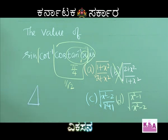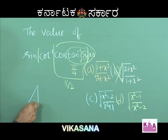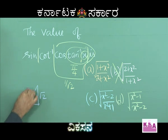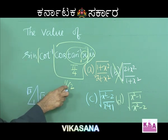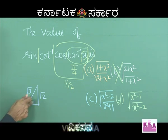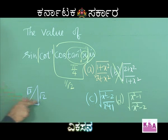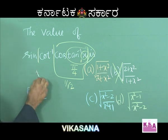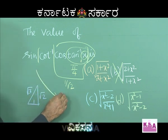Consider 1 by root 2. Cot inverse of 1 by root 2: let theta equal cot inverse of 1 by root 2, so cot theta equals 1 by root 2. This means the adjacent side is 1 and the hypotenuse side involves root 2. The hypotenuse is root 3. So cot inverse of 1 by root 2 equals sin inverse of root 2 by root 3, because sine equals opposite over hypotenuse, giving root 2 by root 3.